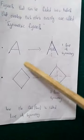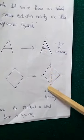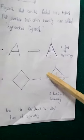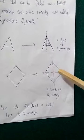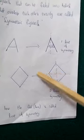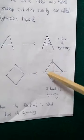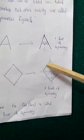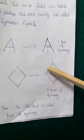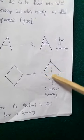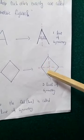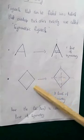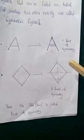Now see one more figure. For this figure, if I fold it vertically — drawing one line here — this gives part 1 and part 2, and part 1 will overlap part 2 exactly. Additionally, we can also divide this figure horizontally. When folded horizontally, the top portion is part 3 and the bottom is part 4, and part 3 will overlap part 4. So this figure is also a symmetric figure.